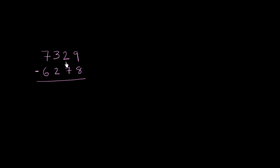We have 7,329 minus 6,278. So let's go place by place and see if we can subtract. 6,278 is clearly less than 7,329, so we should be able to do this.